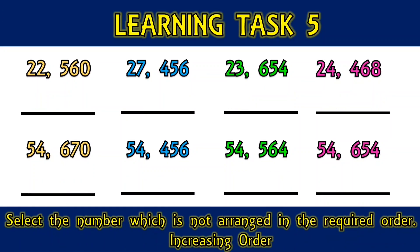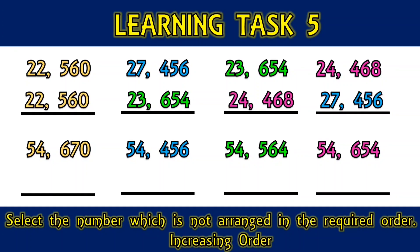Select the number which is not arranged in the required order. Increasing order: 22,560, 27,456, 23,654, 24,468. Now, give the increasing order for this set of numbers.